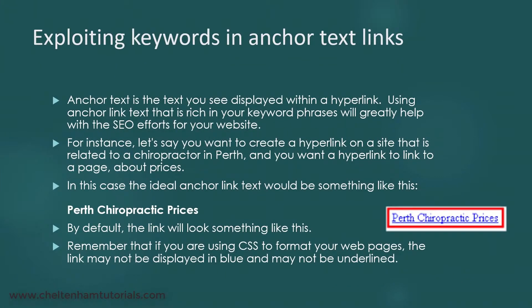In this example from a chiropractor website, let's say you wanted a link to the prices page — the actual anchor text could be something like 'Perth chiropractor prices'. In this particular case the text is displayed as blue and underlined, but depending on how your system is set up, sometimes it's underlined and blue, sometimes other colors, maybe not underlined — it varies from one website to another. But it's important to realize that the text you use within the anchor text can greatly affect your SEO.